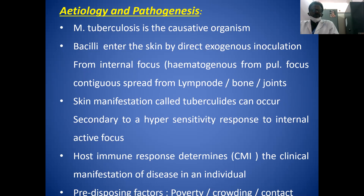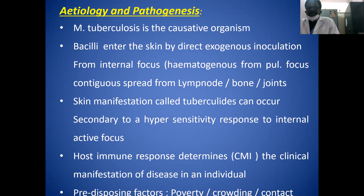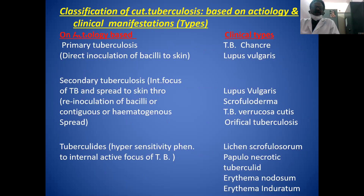The fourth pathogenic mechanism is that the immune response, that is cell-mediated immunity (CMI), determines the clinical manifestation of disease in the individual. The three predisposing factors are poverty, overcrowding, and contact with infected persons.